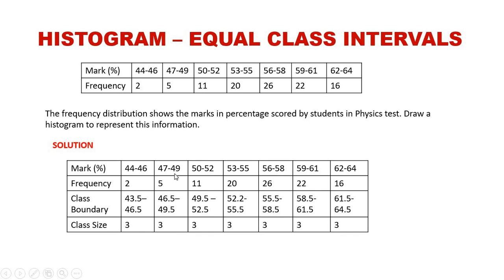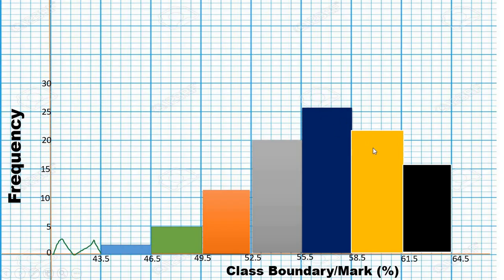Now we prepare the histogram. For equal class intervals, we plot frequency against class boundaries, which here represents the marks in percentage. Note that I left a break on the axis because we did not start from zero, starting instead from the lowest class boundary of 43.5.